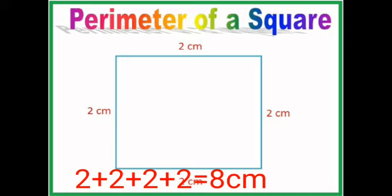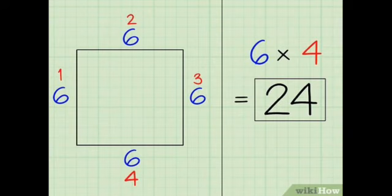Now let us see another square. Here the side is 2 centimeters. So all four sides means 2 plus 2 plus 2 plus 2, equal to 8 centimeters. So 8 centimeters is the perimeter of this red square.